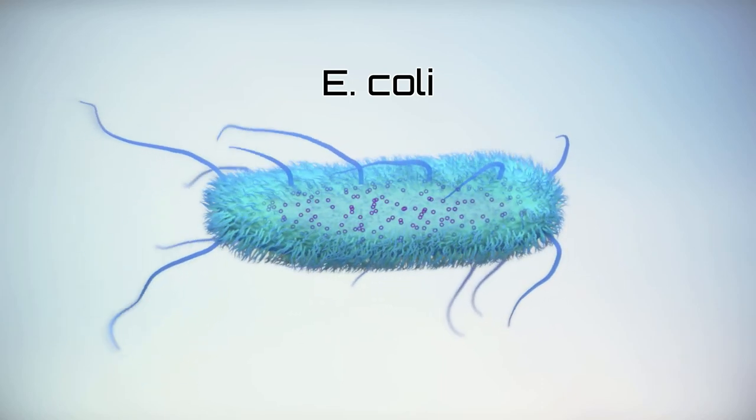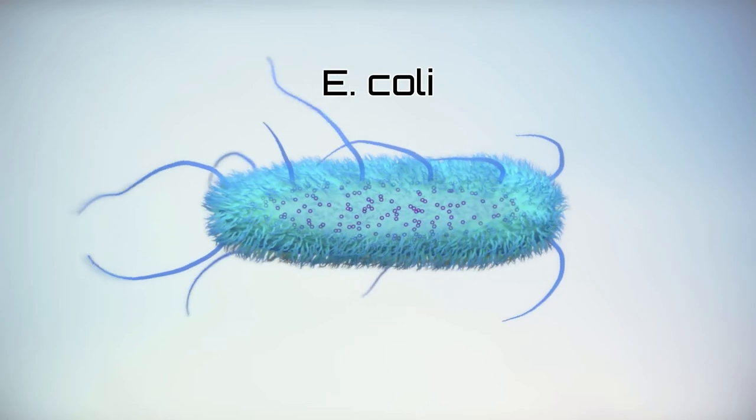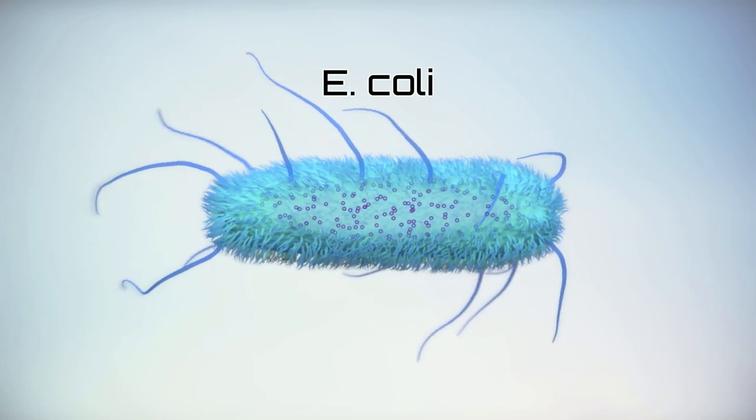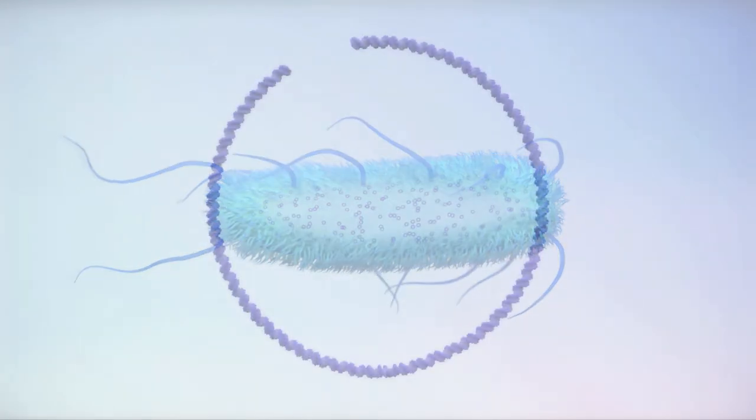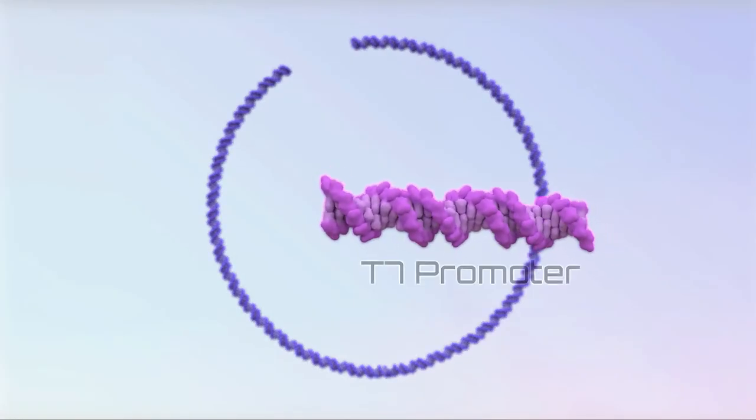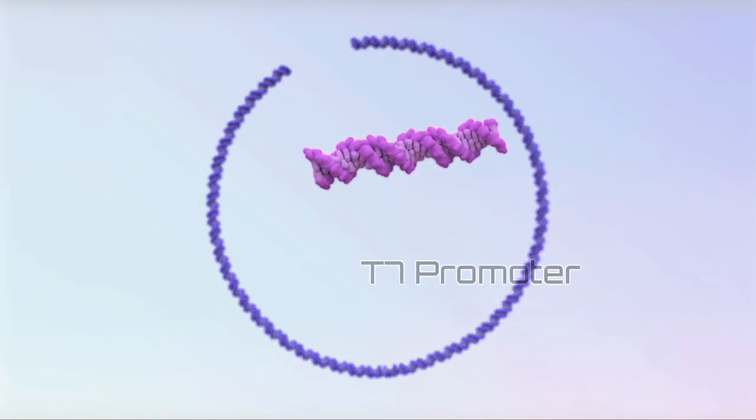The plasmid also includes a gene that ultimately will result in synthesis of our target protein, insulin. This gene is driven by the T7 promoter we also inserted into the plasmid.